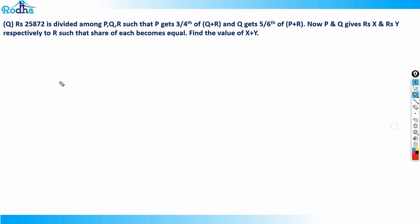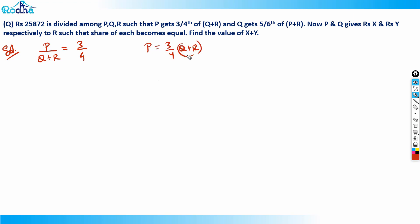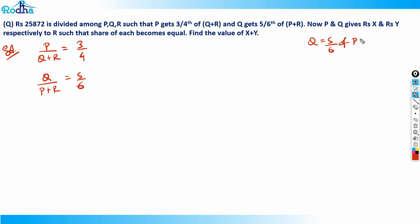The total amount is rupees 25,872 divided among P, Q, and R. Since P gets three-fourth of Q plus R, I can write P upon Q plus R equals three by four. For the second condition, Q gets five-sixth of P plus R, so Q upon P plus R equals five by six.